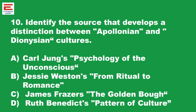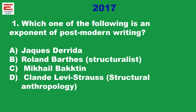Comparing 2017 and 2019 questions: 2017 questions are relatively easy, but in 2017 there were only 8 direct questions from this unit, whereas in 2019 there were 10 questions. First 2017 question: Which one of the following is an exponent of post-modern writing? The answer is Jacques Derrida. Roland Barthes and Mikhail Bakhtin are structuralists; Claude Lévi-Strauss is a structural anthropologist. All four writers should be studied well, as their names repeatedly surface in questions.